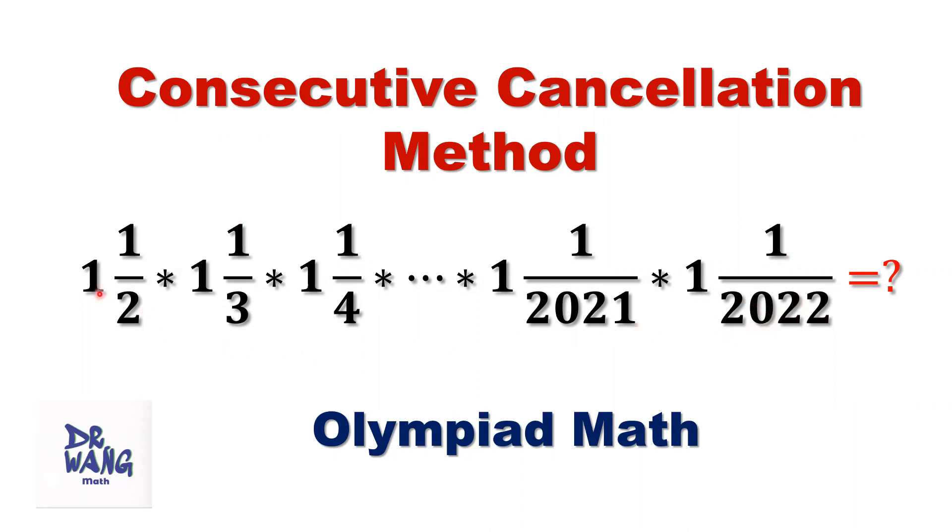If we consider one-and-one-half is the sum of one-plus-one-half, second term is one-plus-one-third, the last term is one-plus-one-over-2022, then simplify, you will make it more complicated. So here, we are going to introduce a simple method called consecutive cancellation.